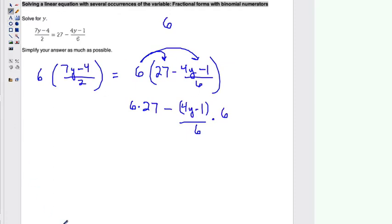Now you can change that 6 into 6 over 1. You can see that we can cancel out these fractions here. And 6 times 27, that gives us 162. And then this leaves us with minus 4y minus 1.